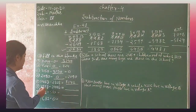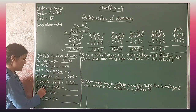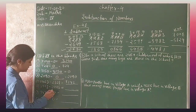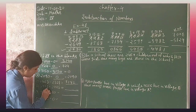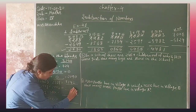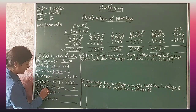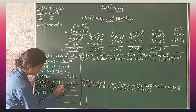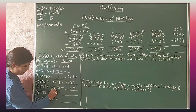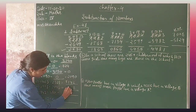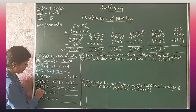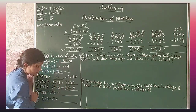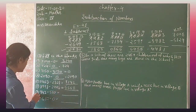8998 minus 2446. 8 minus 6 is equal to 2. 9 minus 4 is equal to 5. Again, 9 minus 4 is equal to 5. And 8 minus 2 is equal to 6. The answer is 6552.